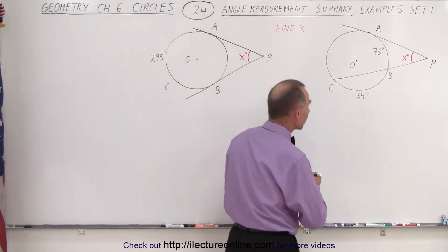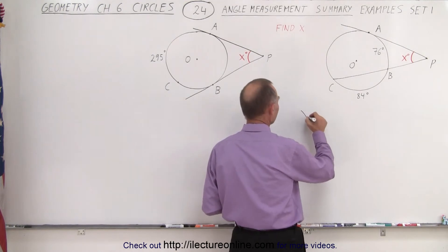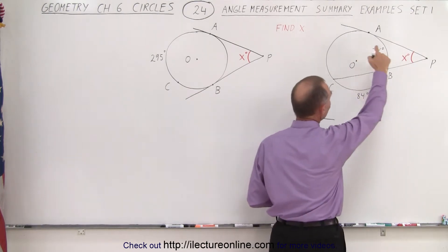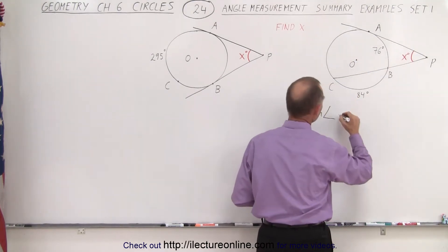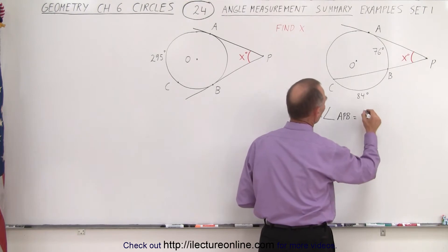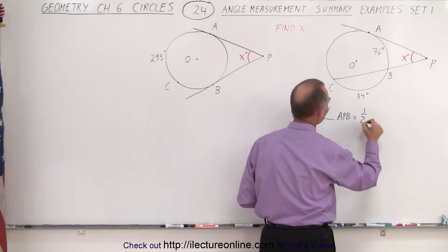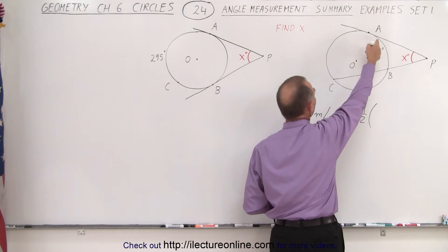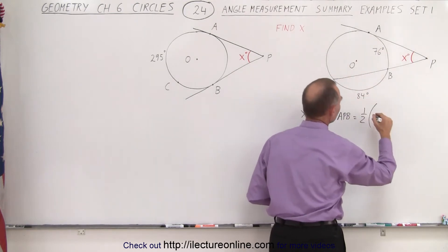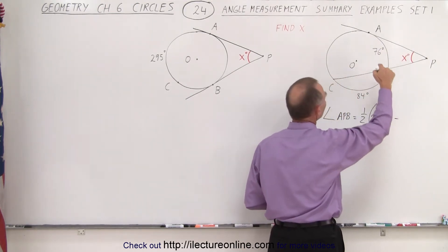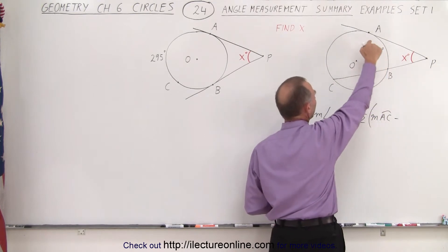We need to use the rule that x degrees, which is equal to the measure of the angle from A to P to B, is equal to one-half the measure of the arc length from A to C, minus the measure from A to B.